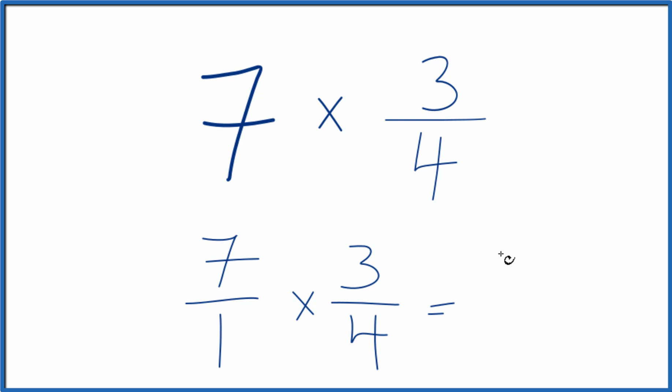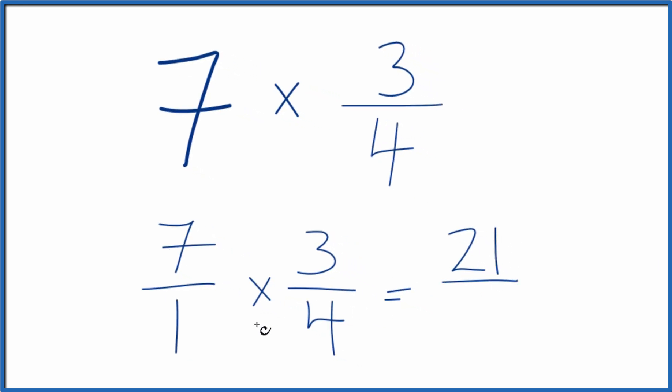So 7 times 3, that's 21. 1 times 4 is 4. And 7 times 3 fourths, that gives us the fraction 21 fourths.